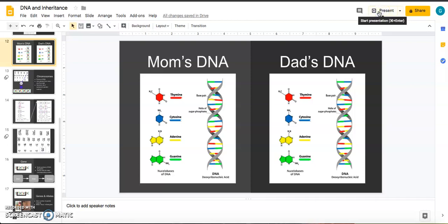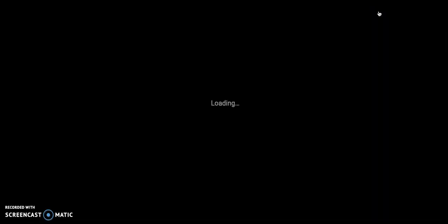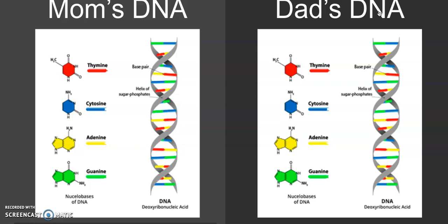Now that we've talked about how DNA gets between generations of cells in the same person through mitosis, as well as how DNA gets into new generations of people through meiosis and the combination of sex cells, let's think a little bit more about heredity — how traits are passed from generation to generation through DNA.